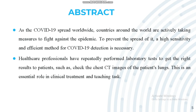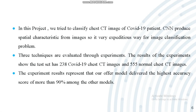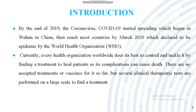This is our abstract slide. To prevent the spread of COVID-19, a high sensitivity and efficient method for detection is necessary, which is why we developed this proposed system using a CNN algorithm. We check the chest CT images of the patients' lungs, which plays an essential role in clinical treatment. In this project we classify chest CT images of COVID-19 patients. CNN produces special characteristics from images, making it an effective approach for image classification. In our experiment, the test set has 238 COVID-19 chest CT images and 555 normal chest CT images. The results show our model delivered the highest accuracy score of more than 90%.